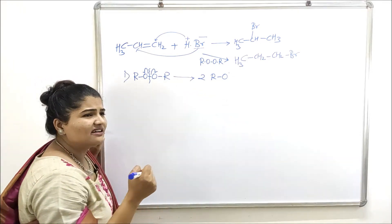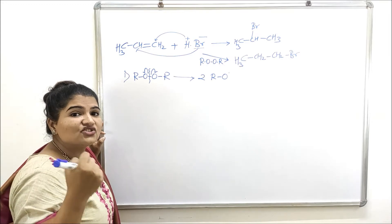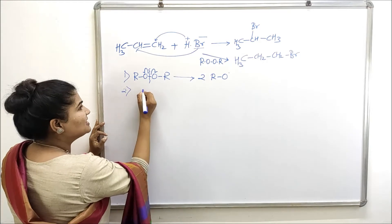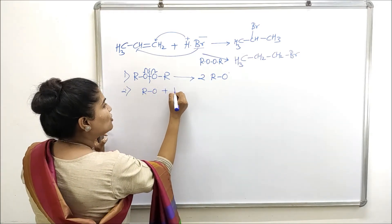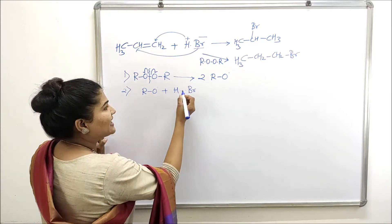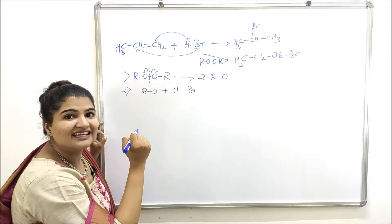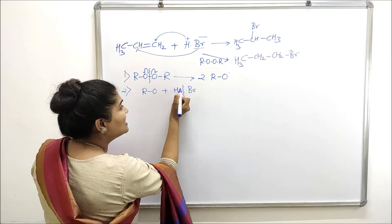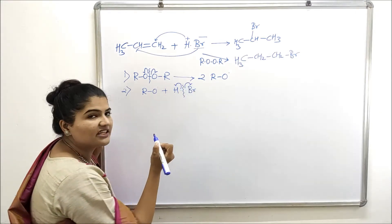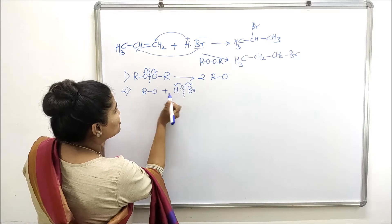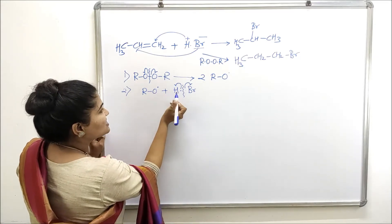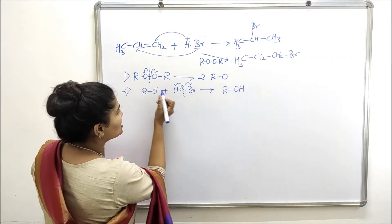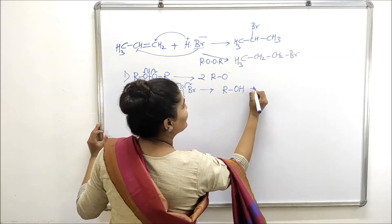Free radicals are extremely reactive — they will try to find a species that will share an electron with them. So in the next step, the alkoxy free radical immediately goes and breaks the bond in HBr. When the H–Br bond breaks homolytically, one electron stays with hydrogen and one with bromine. Hydrogen joins the oxygen to form R–O–H, and the bromine atom is released as a free radical with a single electron.